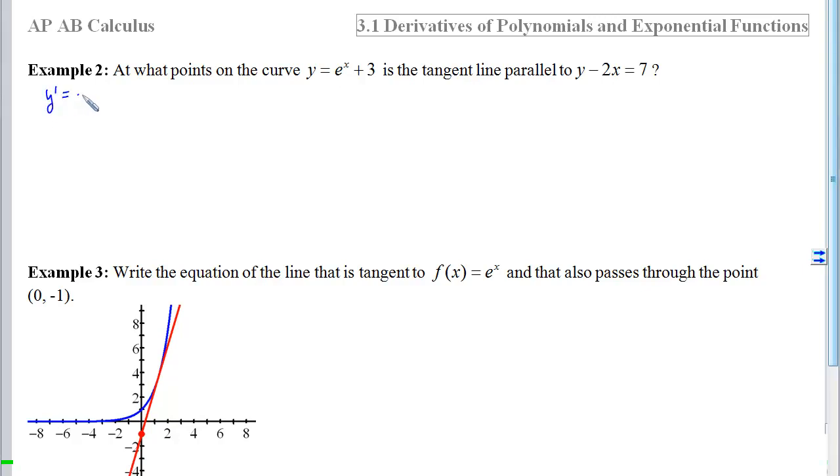So that means we need y prime, which is e to the x, to be the same as the slope of this line. So we can read the slope off if we get the line in slope-intercept form and see that that slope is 2, and the goal is to solve for x. So to get x out of that exponent, we have to get it down by logging both sides. So if I ln both sides, that x will come in front, and I'll get x equals the ln of 2. The question is, what are the points on the curve? So that means I need to plug ln of 2 into the function to see what comes out. e to the ln of 2 is a 2 plus a 3 will give us an ln of 2 comma 5.